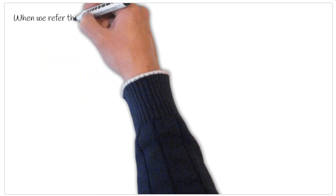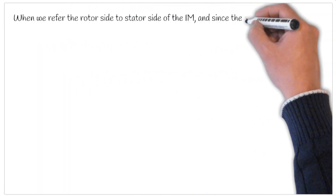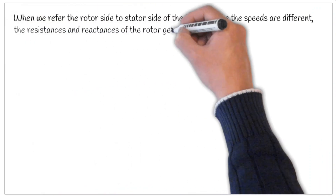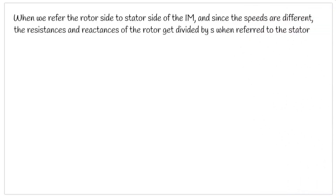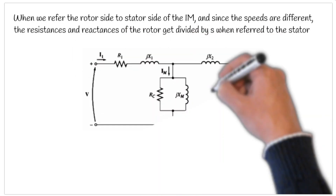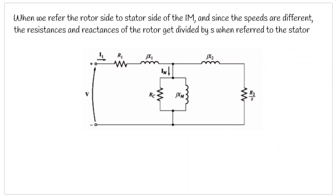Lastly, we need to refer the rotor side circuitry to the primary side — that is, the stator side of the induction motor. Since the rotor is rotating at a speed different from that of the rotating magnetic field, all the resistances and reactances on the rotor side get divided by S when referred to the stator side. Since our reactance was S times X2, it becomes only X2 on the stator side. And our resistance on the rotor side was R2, it becomes R2 divided by S on the stator side. This is the final equivalent circuit of the induction motor, used for analysis of different power losses, efficiency calculations, and power flow diagram equations.